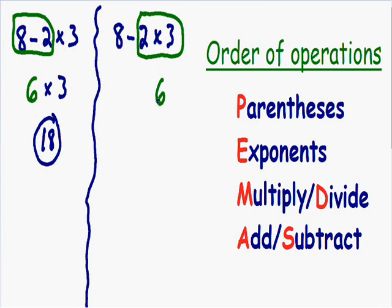We can't forget about the left side of this expression — this 6 is being subtracted from 8. So now we have 8 minus 6, and we know that 8 minus 6 is equal to 2.